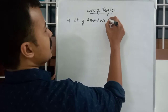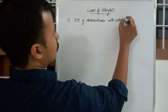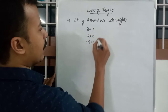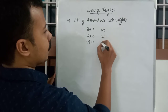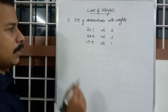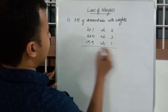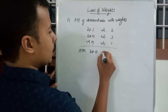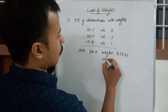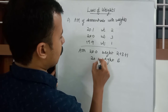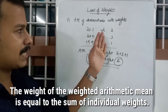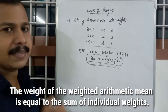Law 2: Arithmetic mean of observations with unequal weights. Suppose the same values — 20.1, 20.0, 19.9 — are given weights 2, 3, and 1. The arithmetic mean is still 20.0, but the weight of this mean will be 2 plus 3 plus 1, which equals 6. So when taking the weighted arithmetic mean, you take the sum of weights as the weight of the final mean value.